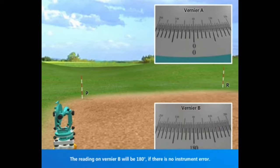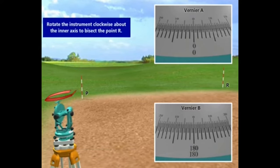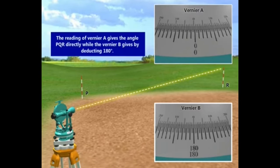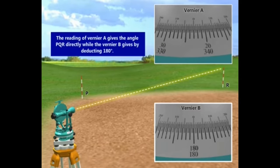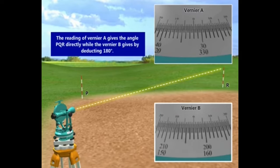If there is no instrument error, sight the station P. Rotate the instrument clockwise about the inner axis to bisect the point R. The reading of Vernier A gives the angle PQR directly while Vernier B gives it by deducting 180 degrees.